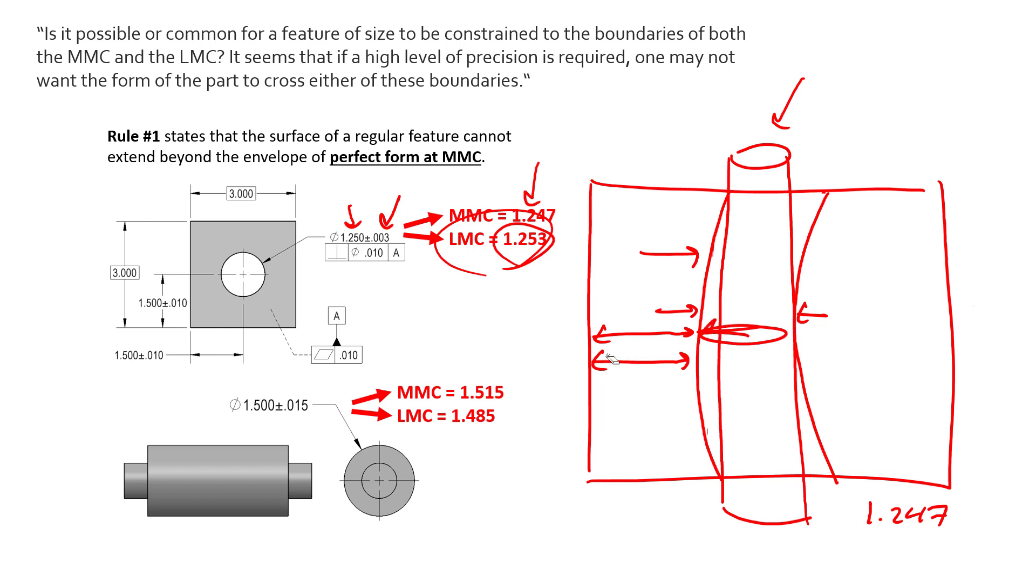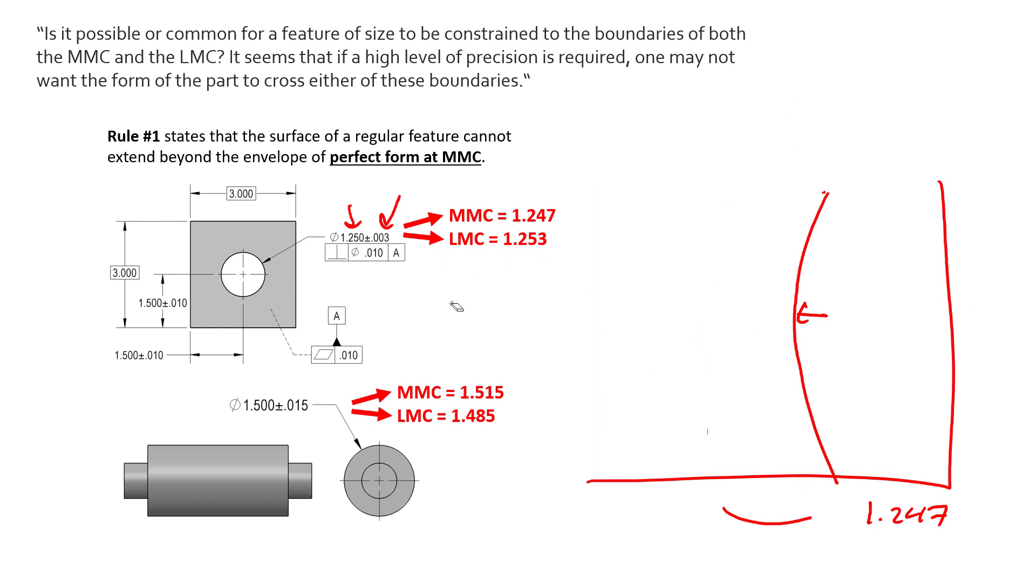part, because we already know what that LMC limit is. If this cross-section is at LMC and it deviates in position as much as it can this way, we can always calculate that. We can always restrict that by limiting just the LMC limit, not having to limit the envelope.